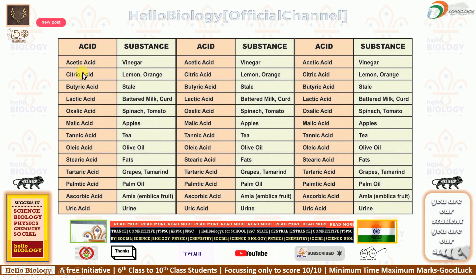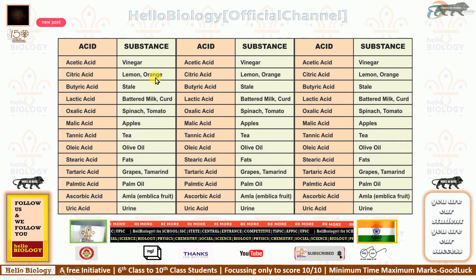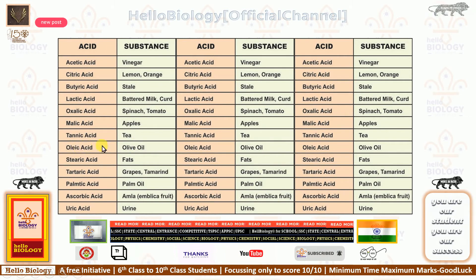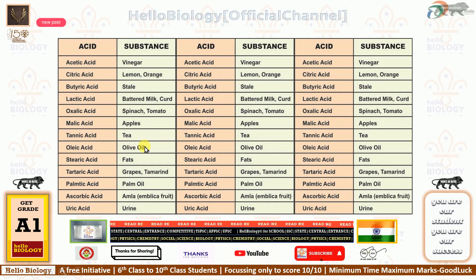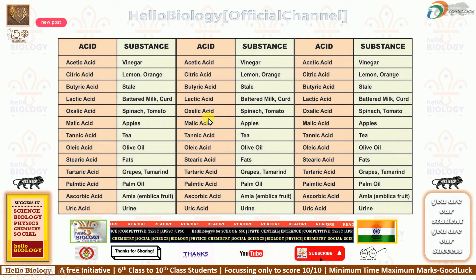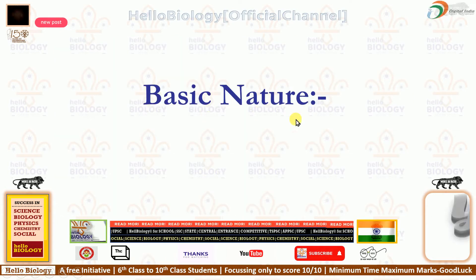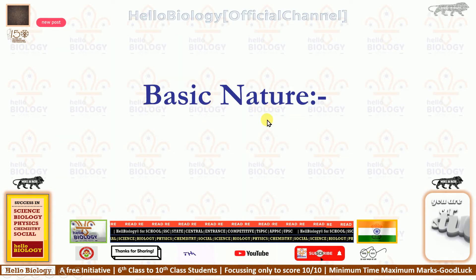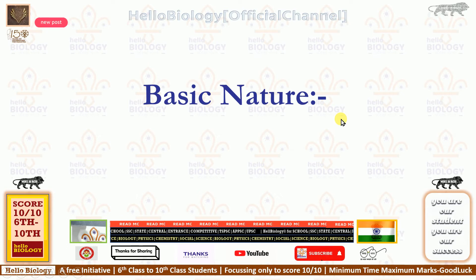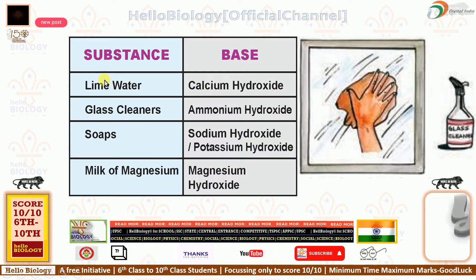If you remember six of these acids, that is enough. Orange, milk with lactic acid, tannic acid in tea, oleic acid in olive oil — these are good ones to remember. Now let us look at the basic nature of substances. We have seen the acidic nature; now let us see the basic nature.